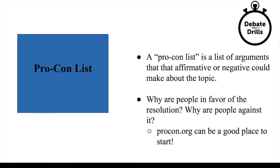The next step in researching a new topic is to create a pro-con list. A pro-con list is a list of arguments that the affirmative or negative could make about the topic. In other words, we're trying to answer two main questions: why are people in favor of the resolution, and why are people against it? There are lots of different approaches to making a pro-con list in terms of places that you can look to find different arguments.